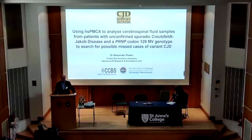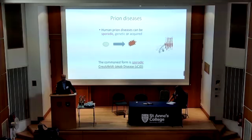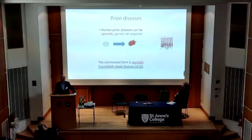I'm Alex Peen, and I work at the CJD Surveillance Unit with Diane up in Edinburgh. As has already been well explained, PRNP diseases can be sporadic, they can be genetic or acquired, and the molecular basis of these diseases is the conversion of the normal PRNP protein that we all express in our bodies to a misfolded disease-associated form. The commonest form in humans is sporadic CJD, and we don't know the cause of this — it's possibly a spontaneous conversion.